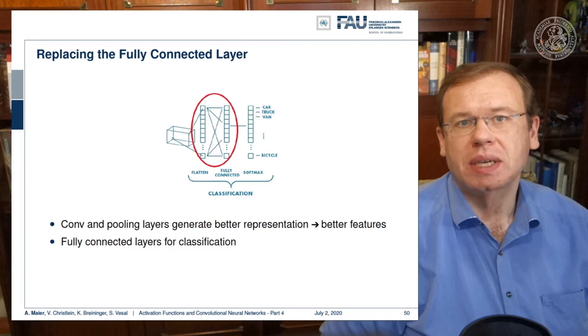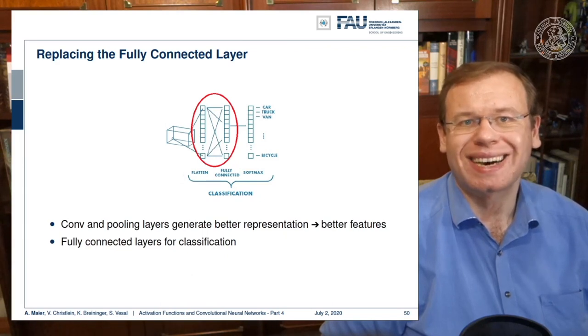Now everything then becomes fully convolutional and we can express essentially the entire chain of operations by convolutions and pooling steps. So we don't even need fully connected layers anymore.